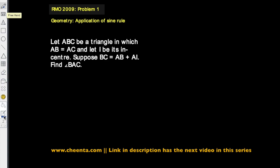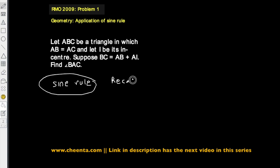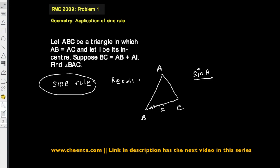Here is a problem that can be done using simple geometry, but just for the heck of it we will use the sine rule. Let's recall what the sine rule was. If we have a triangle ABC, the sine rule is a relationship that ties up the angles and sides of the triangle. It simply says that sine of angle A over side a — the side opposite to angle A — is equal to sine of angle B over side B, which is equal to sine of angle C over side c.